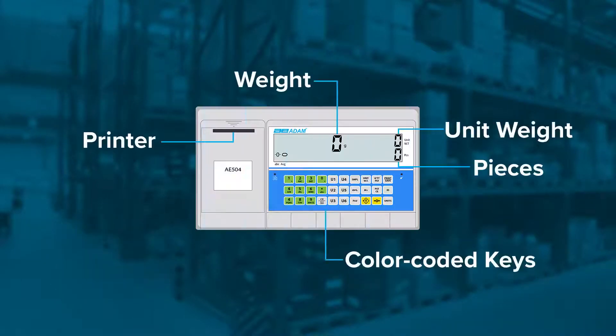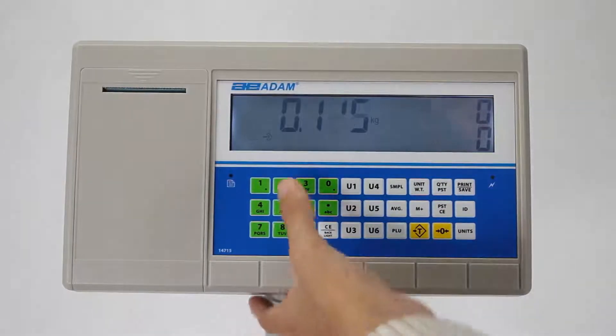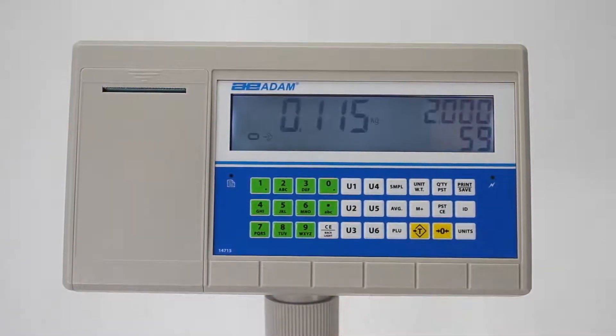The AE504 sealed, color-coded keypad offers quick recognition of the most frequently used buttons. The numeric keypad can be used to manually enter tear weights, unit weights and sample sizes.